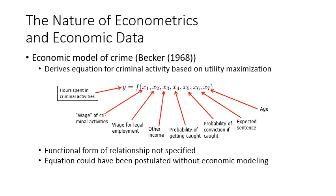X5 is the probability of conviction if caught — meaning how many of those already caught will go to court and receive a sentence from the court. This is expected to have a negative relationship with Y. X6 is the expected sentence length — for example, how many years those caught and convicted will stay in prison. We expect this relationship to also be negative.